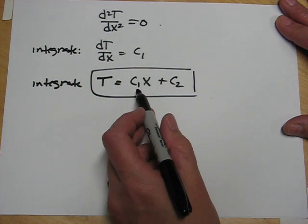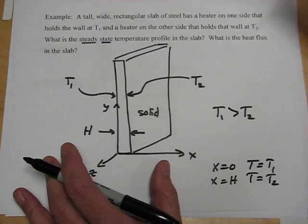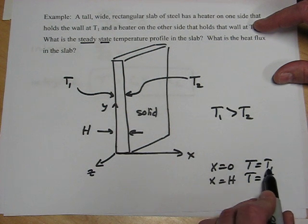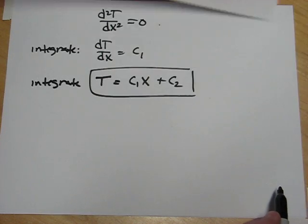If we use, then, the two boundary conditions we discussed previously, we can solve for the two constants of integration. We have that at x equals zero, T equals T1, and x equals h, T equals T2. And we can solve.